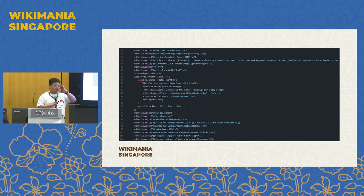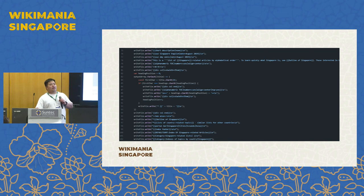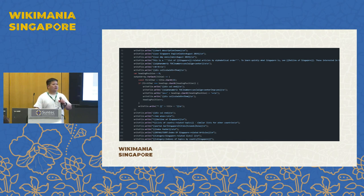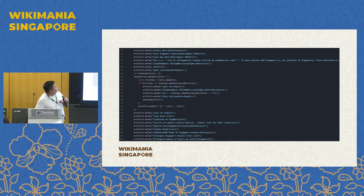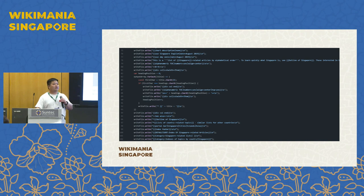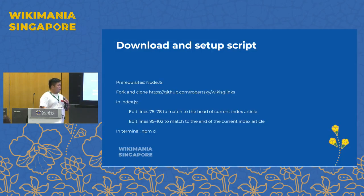Here's the script to show you what you need to edit. Lines 74 to 78 contain the wiki markup of the index header code. Every time it runs, that's already loaded there — it outputs to a text file and you copy the entire text file and paste it onto the wiki itself. You don't need to find where in the wiki article to remove and insert the new list; you just do it wholesale. Similarly at the bottom, lines 95 to 102 contain the bottom end of the index, including categories and 'see also' sections.